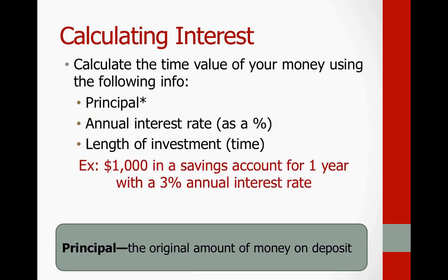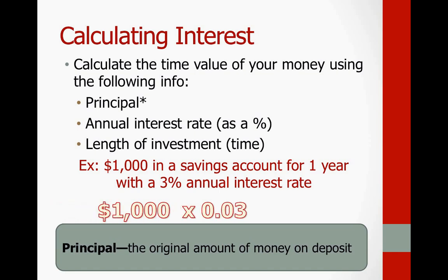The example here: you deposit $1,000 into a savings account for one year with a 3% annual interest rate. We have our principal of $1,000 and our interest rate of 3%, or 0.03 — just move the decimal over to the left twice. You earn $30, so at the end of one year in your bank account you have $1,030. A very simple interest calculation, and this is going to be the stepping stone for what we'll cover in class.